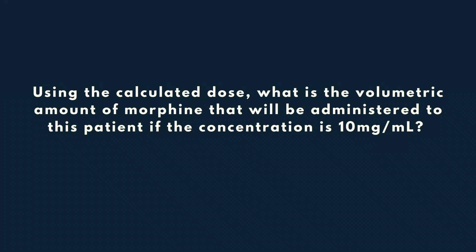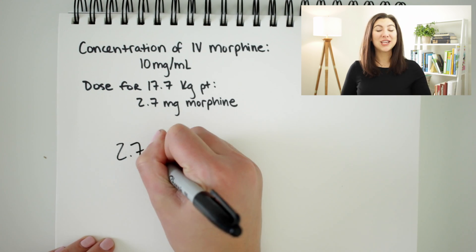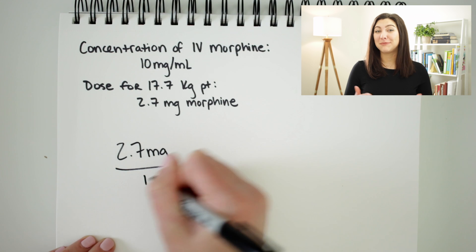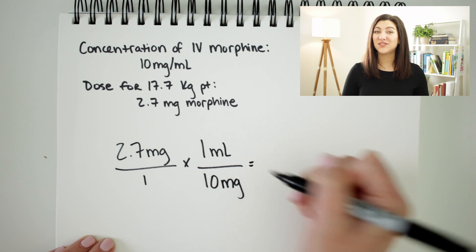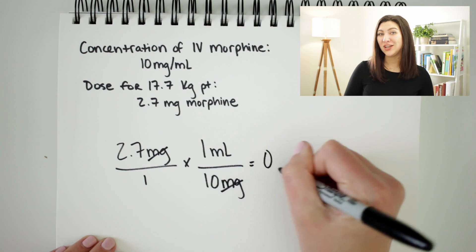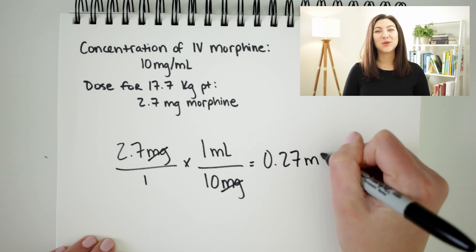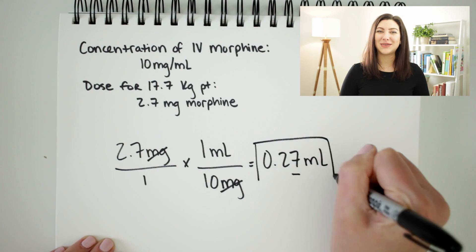Now the dose is necessary information, but the dose in and of itself doesn't tell us how much volume we need to administer to the patient. So in order to find the volume of the dose, we need to know the concentration of that dose. We know that the concentration of the morphine we are using is 10 milligrams per one milliliter. We take the 2.7 milligrams and multiply by the concentration. Our units cancel and our answer is 0.27 milliliters of morphine. Because our answer is less than one, we round to the hundredths place — so our answer is 0.27 milliliters of morphine.